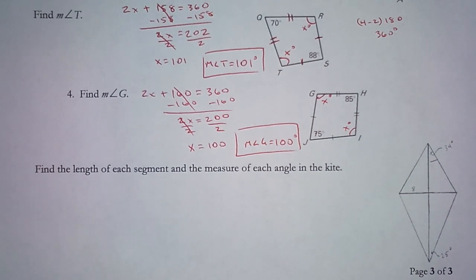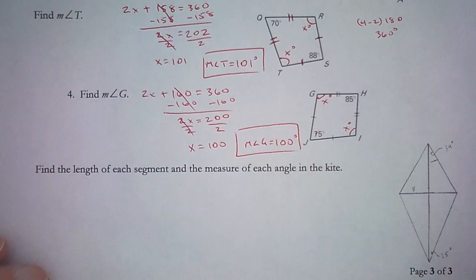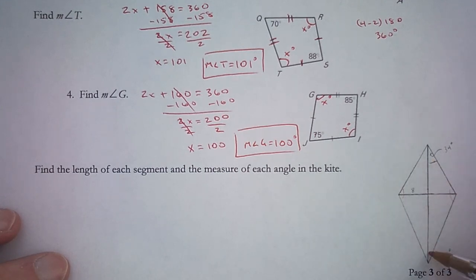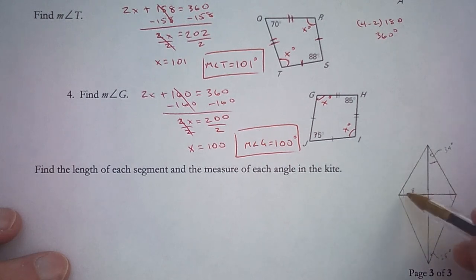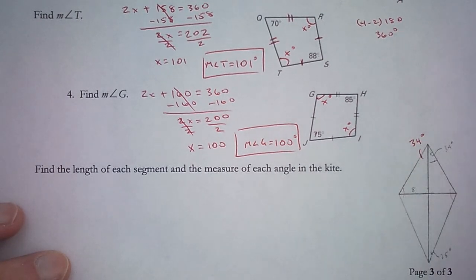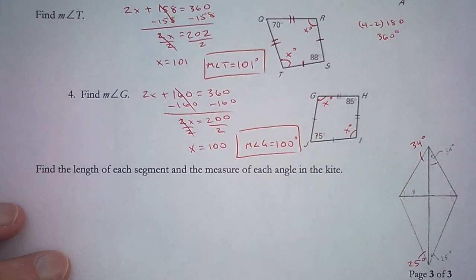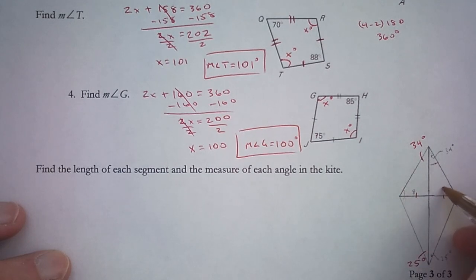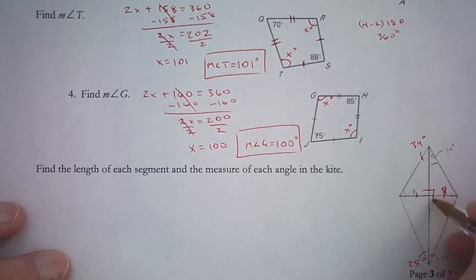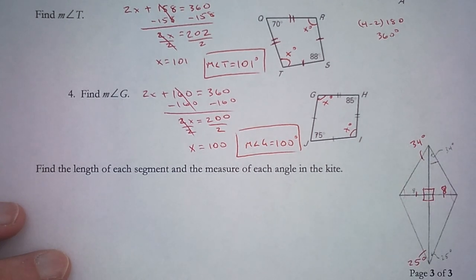Last, find the length of each segment and the measure of each angle in the kite. We have 8 here, 34 degrees here, and 25 degrees here. The congruent angles are not bisected, but the non-congruent angles are — so this is 34 degrees and this is 25 degrees on each side of the diagonal. One of the diagonals in a kite is bisected, so this segment is 8. Since diagonals are perpendicular, we have right angles there.